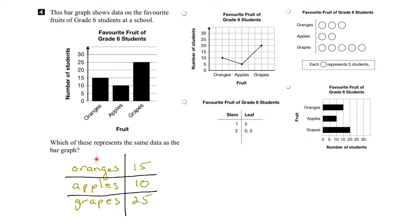Now let's compare these data with the other forms of representation. We'll start with this line graph here. For oranges, in this representation, the number of students who liked oranges is ten. The number of students who liked apples is five. And the number of students who liked grapes is twenty. If we compare these values, they are not the same. Therefore, this is not a representation of the data given here.